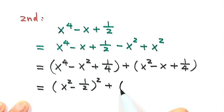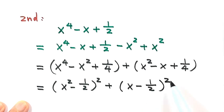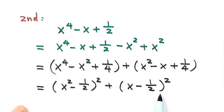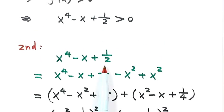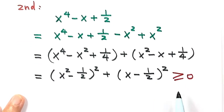The second group also makes a complete square: x minus one half, squared. Because each square is bigger than or equal to zero, their sum is of course bigger than or equal to zero. But the question asks us to prove the expression is strictly bigger than zero, so we need to prove it cannot equal zero.